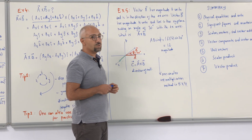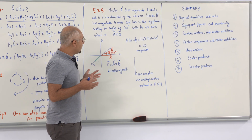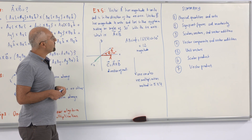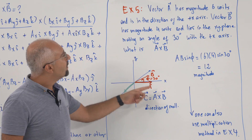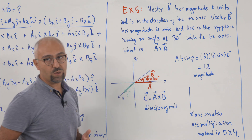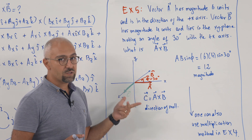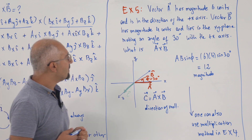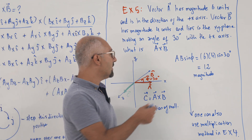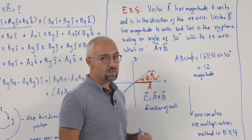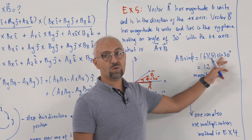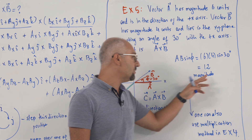The final example is another vector product. Vector A has a magnitude of 6 units in the x-axis direction, and vector B has a magnitude of 4 units lying in the xy-plane, with a 30-degree angle between them. The cross product magnitude is A × B = |A|·|B|·sin(phi) = 6 × 4 × sin(30°) = 12 units.